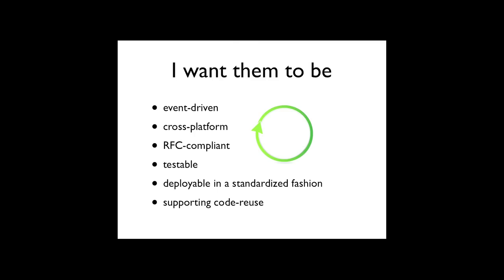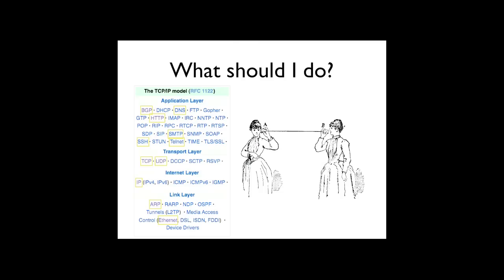Hopefully I'm writing testable code that is deployable using some sort of standardized interface. And hopefully, if I'm writing clients and servers for the same protocol where they share a lot of logic, I can reuse that code in the protocol implementations and in testing. So I have lofty goals. What are my realistic options in Python?